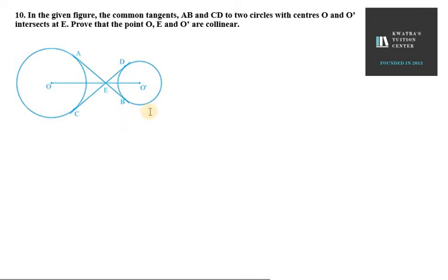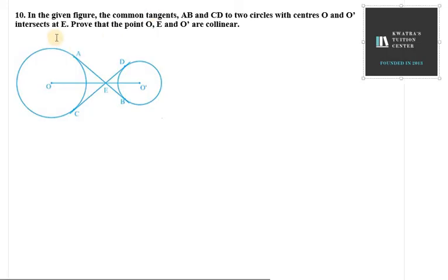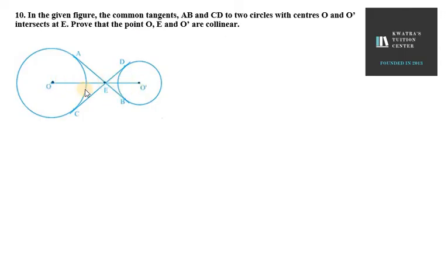Hello everyone, let's start with question number 10. It says: in the given figure, the common tangents AB and CD of two circles with center O and O' intersect at E.